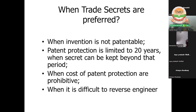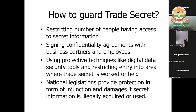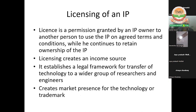Sometimes trade secrets are preferred over patents — when an invention is not patentable, trade secret protection is advisable. In case of patent, the protection is limited to 20 years, but in case of trade secret, the protection is not limited by time — it is for time immemorial. The cost of patent protection is also very high and difficult. You can restrict the number of people having access to trade secret information by marking that particular area as confidential, signing confidentiality agreements with business partners and employees, and using digital data security tools.